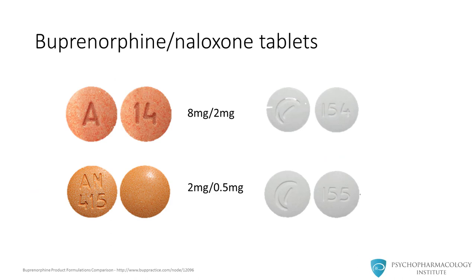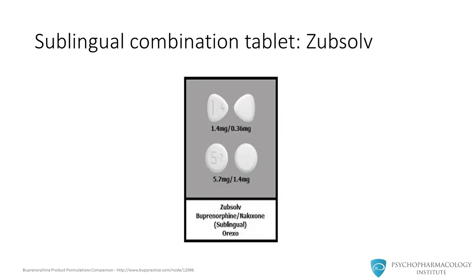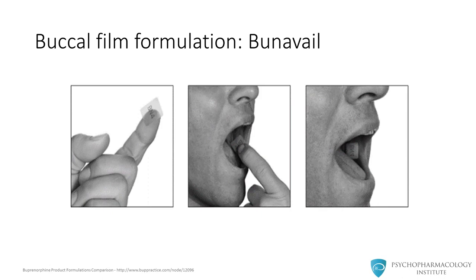Both the combination and monotablet formulations come in two sizes: 8-2 milligrams or 2-0.5 milligrams. The first number refers to the buprenorphine dose and the second to the naloxone dose, at a 4-to-1 ratio. The sublingual films come in additional sizes, with buprenorphine doses of 2, 4, 8, or 12 milligrams with the corresponding naloxone dose at the 4-to-1 ratio. There is also a brand sublingual tablet called Zubsolv, which comes only in the combination tablet with higher bioavailability leading to smaller dose ranges. A buccal film formulation is also available for addiction treatment.